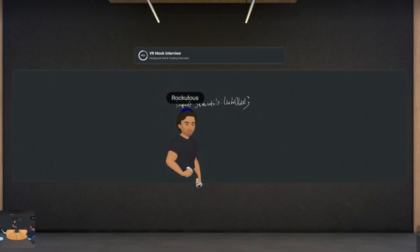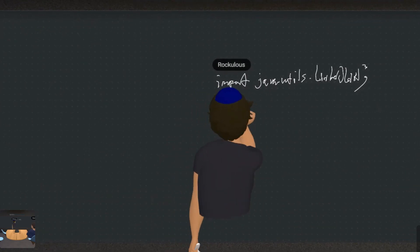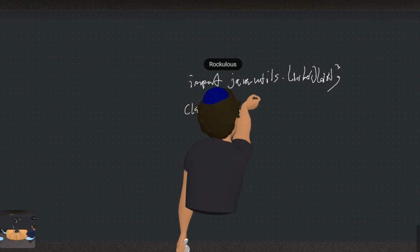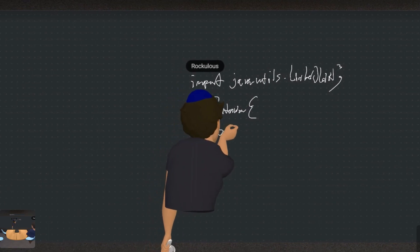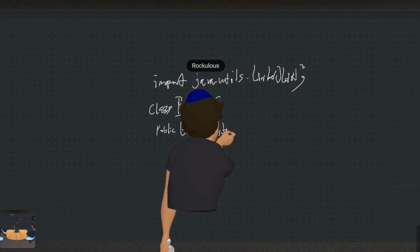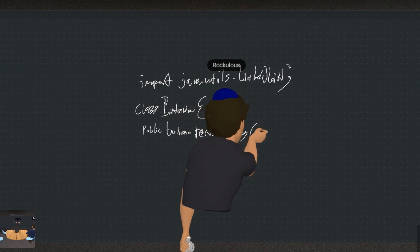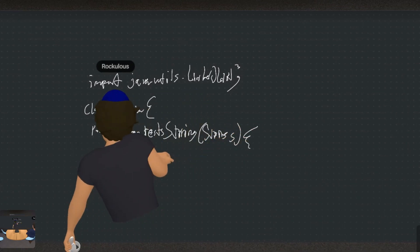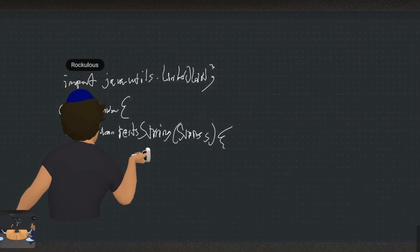We'll call it class — I don't know, something like IntReview. We'll do a public boolean method called testString, and it's going to take a string S.